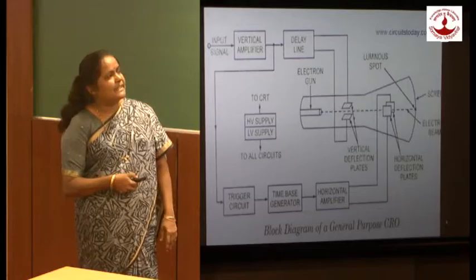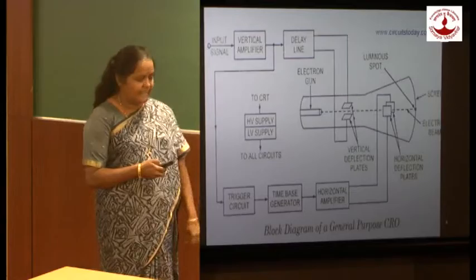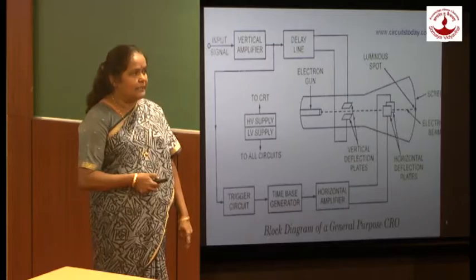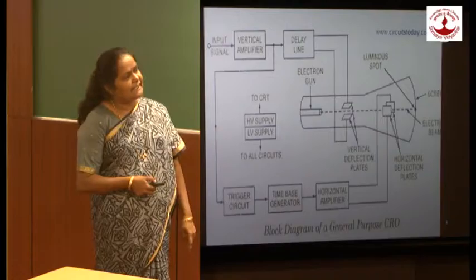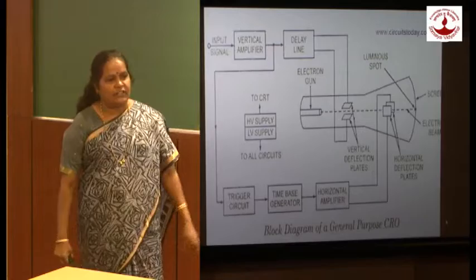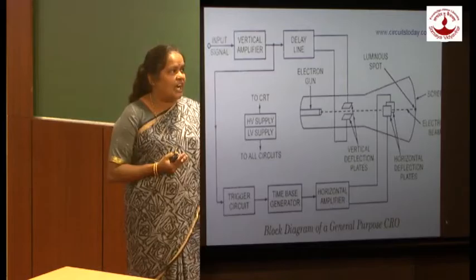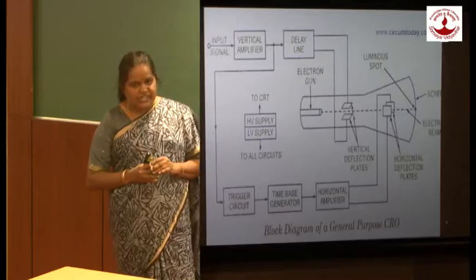The first subsystem is the CRT. The CRT consists of three parts: first is the electron gun, second is the deflecting plates — horizontal deflecting plates and vertical deflecting plates — and third is the CRO screen. The electron gun produces a sharply focused and very high velocity electron beam.